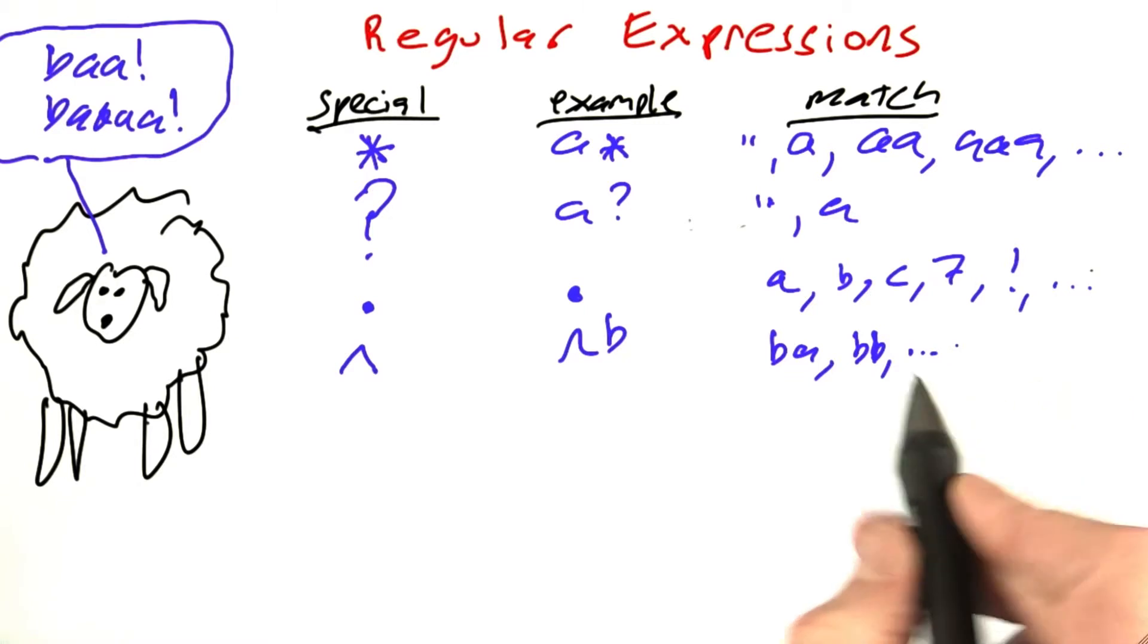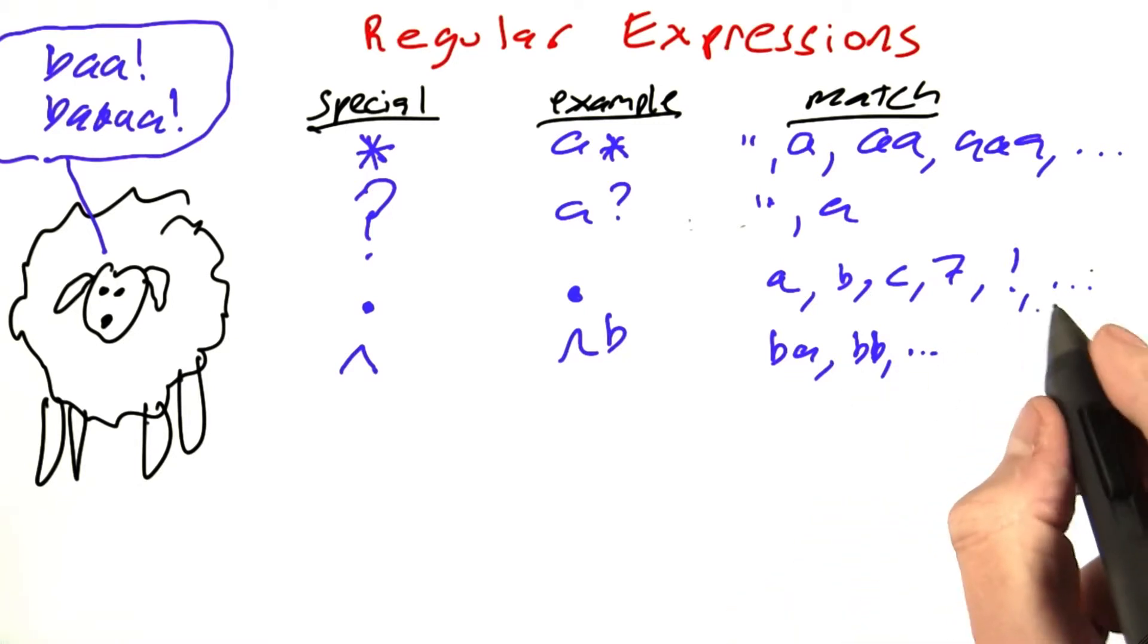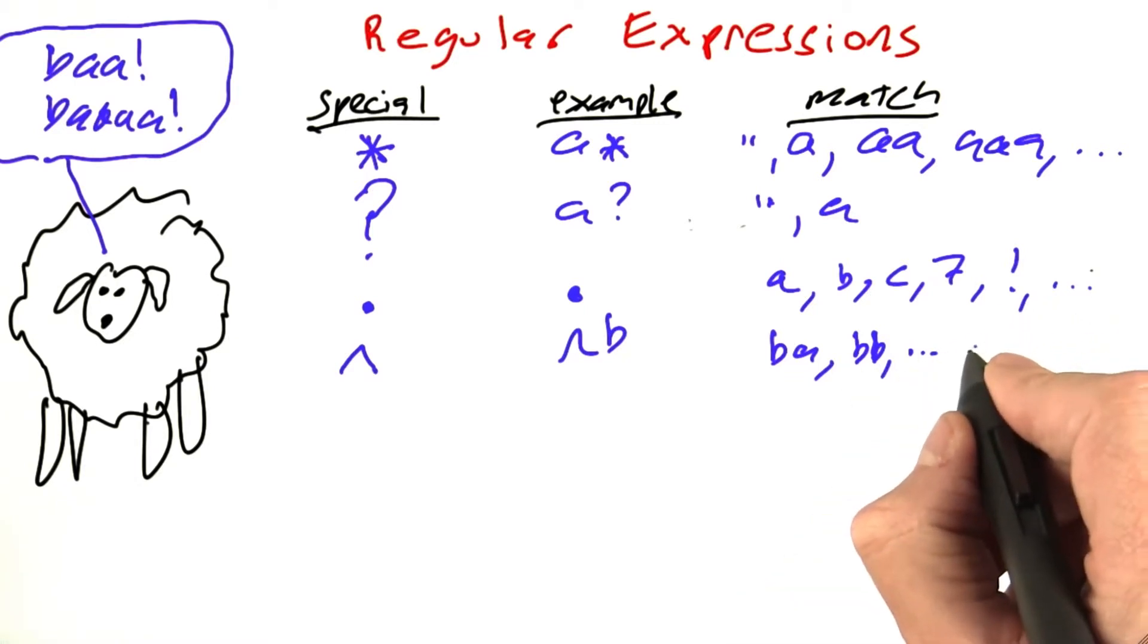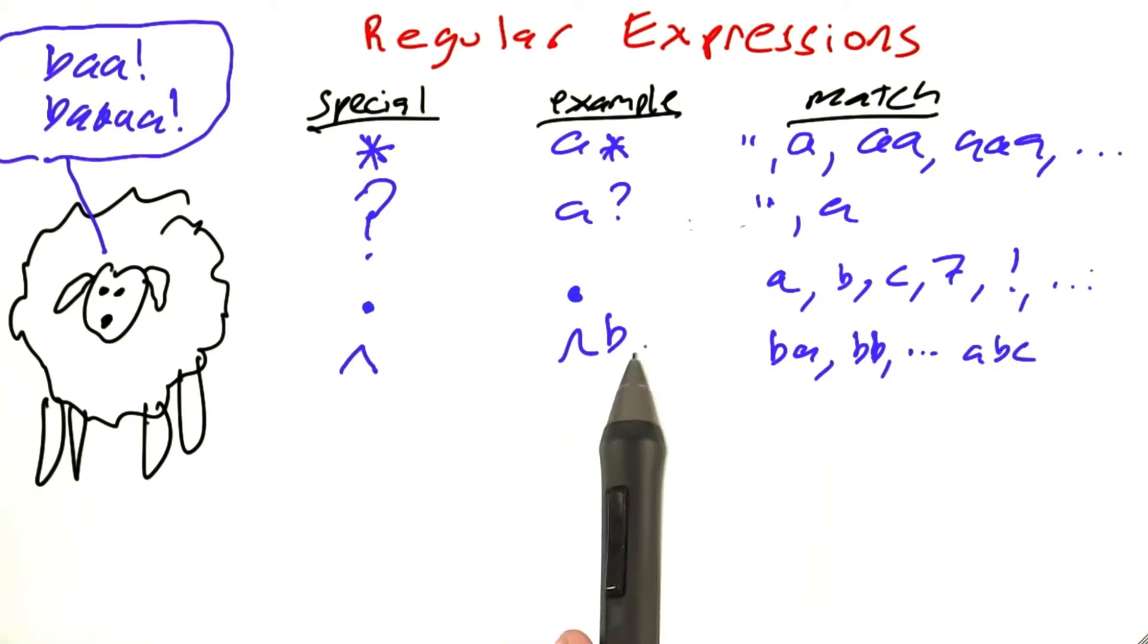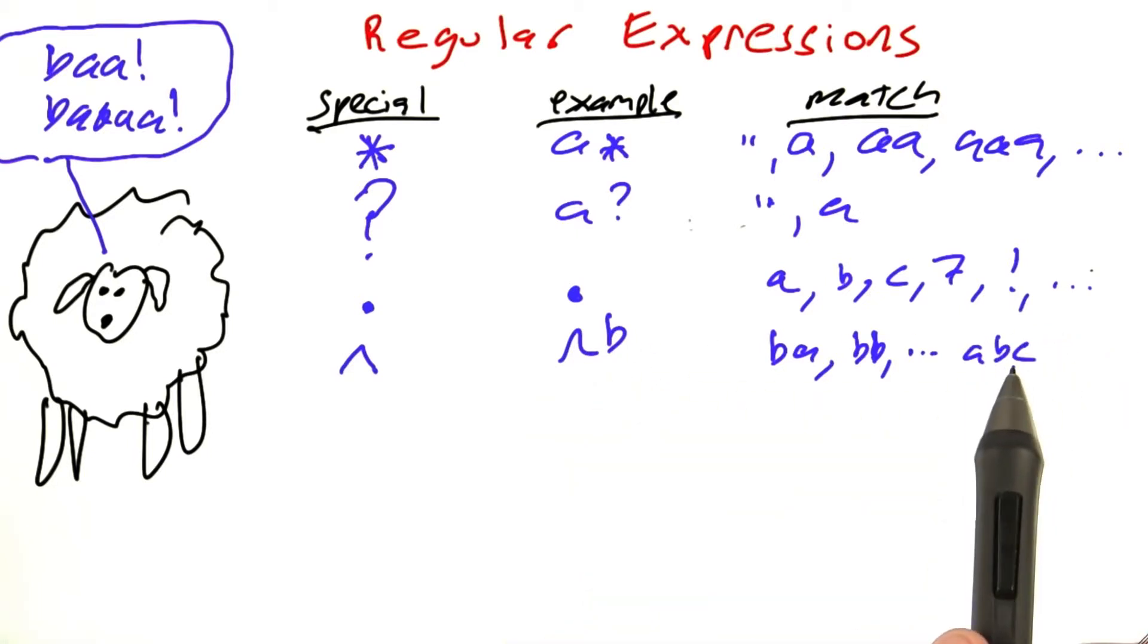or anything else where B is the first character, but it doesn't match something where the B is in the middle, like ABC, whereas B by itself would match against ABC in the middle. And finally,